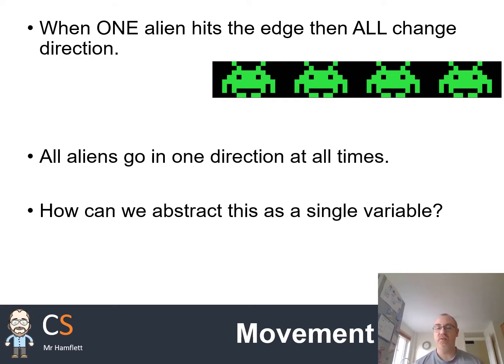We can abstract this using a single variable because at the end of the day, the aliens are all moving the same direction at all times. Therefore, we don't need to have an individual direction for every single alien. We simply just need to know which direction they are traveling in.